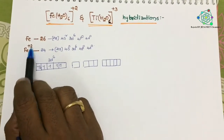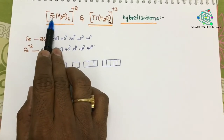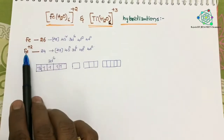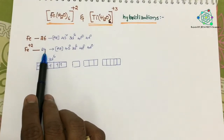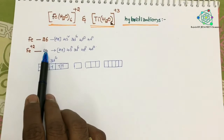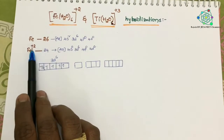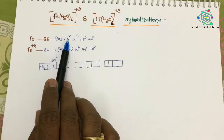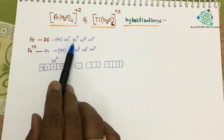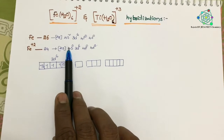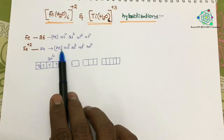Here, if you calculate its oxidation state, its oxidation state is plus 2 in this complex. Therefore, it will have only 24 electrons in this central atom because it lost two electrons. Those two electrons we have to remove from the 4s. Therefore, this electronic configuration will be changed accordingly.